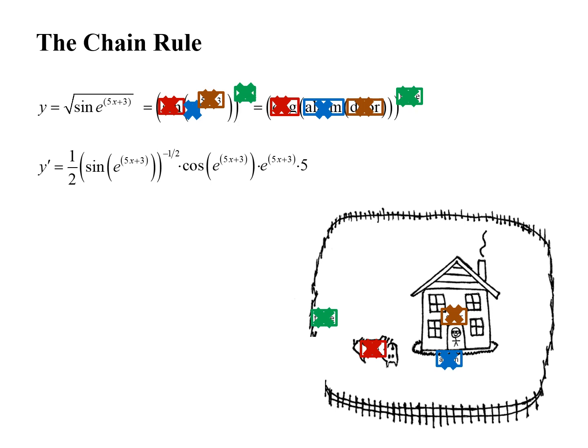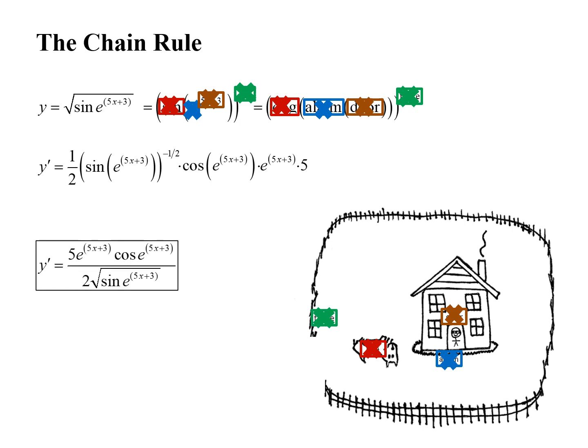Let's clean up our answer a little. We can move the negative 1 half power to the bottom — cross the line, change the sign, it becomes positive 1 half in the denominator — and then change that to a square root, put coefficients out front, rearrange some of the terms, and there's the final answer. If you can understand this problem for the chain rule, you can pretty much understand most of the problems you'll see in your homework. Let's go over one more problem.